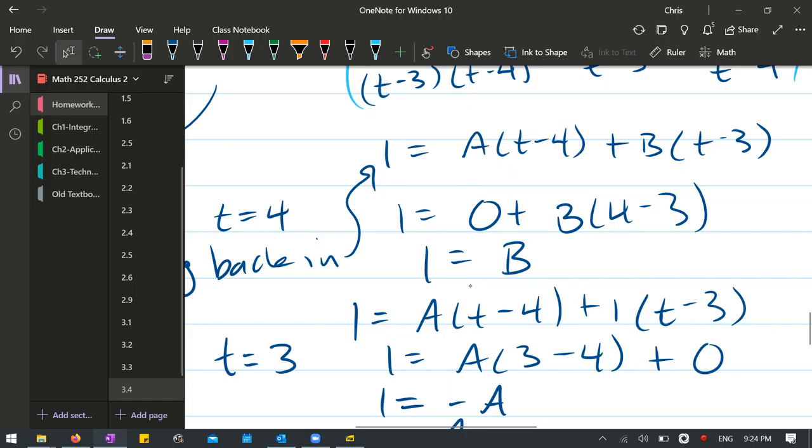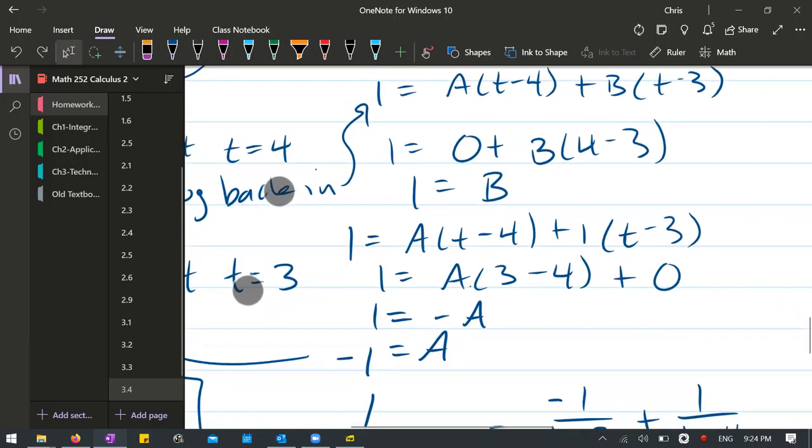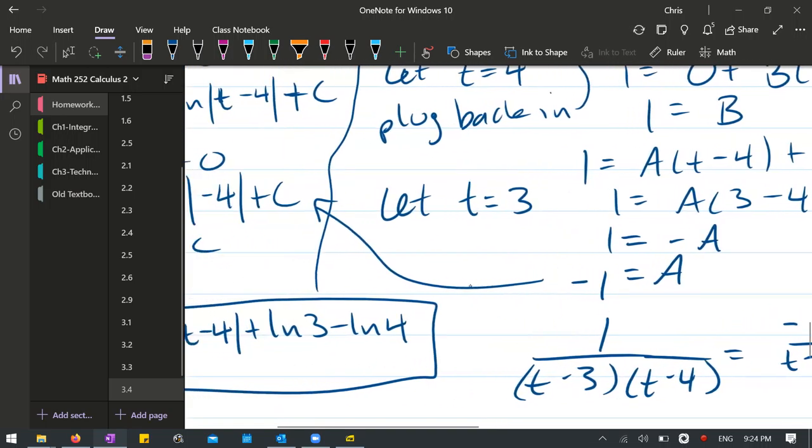Then you plug in t equals three, which I did right here. That turns this term into a zero. And so you get negative A equals one, which means A equals negative one. Then you go ahead and plug that back into the original where you have the two fractions, except you had an A and a B. Now you have the two numbers. So we'll take that back to the integral now.